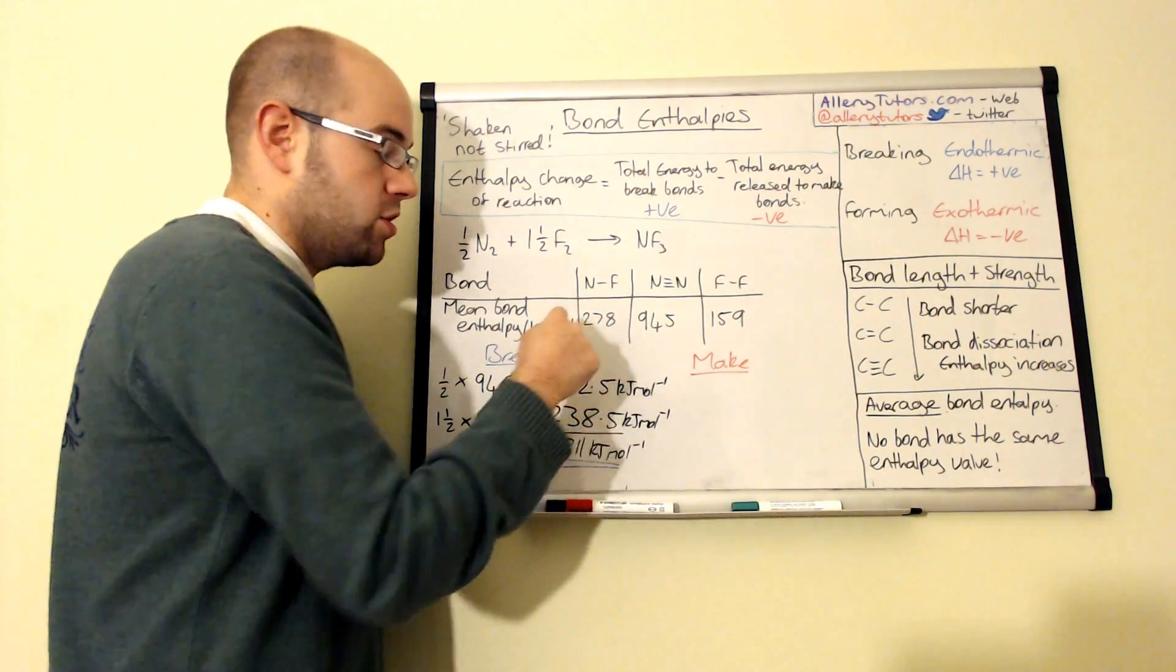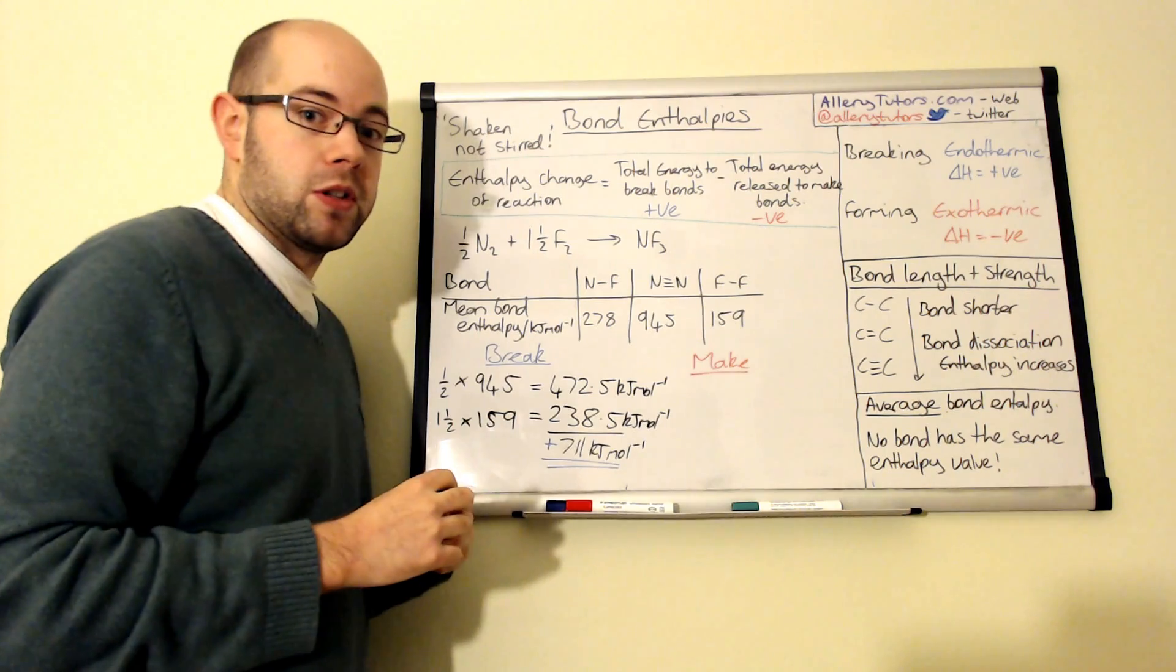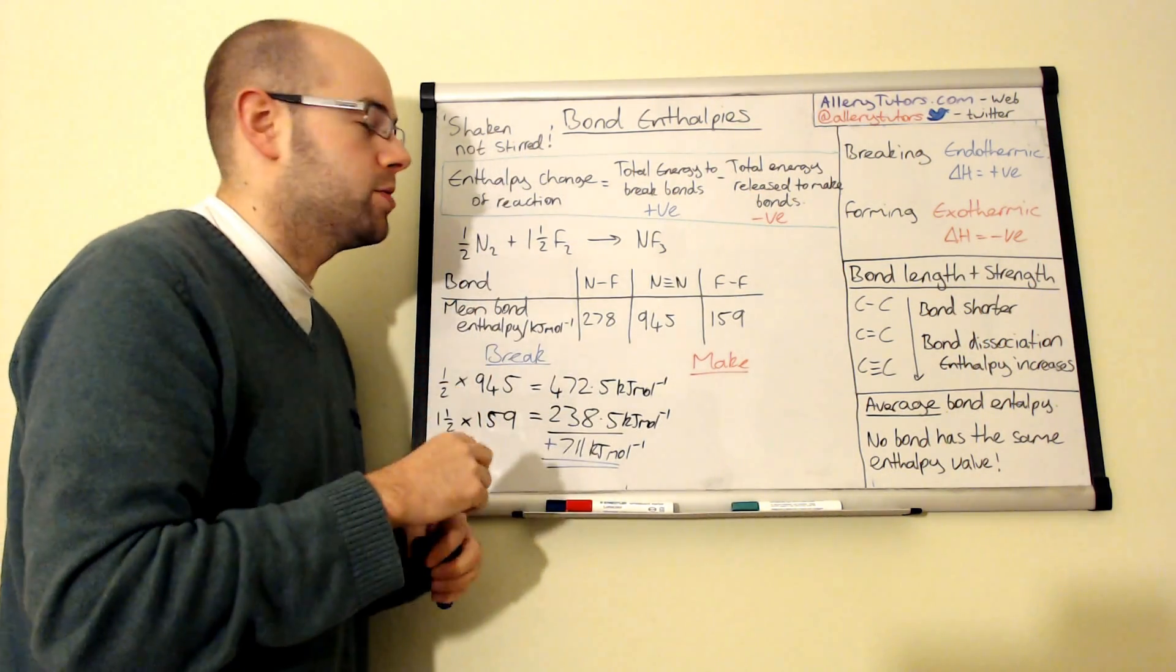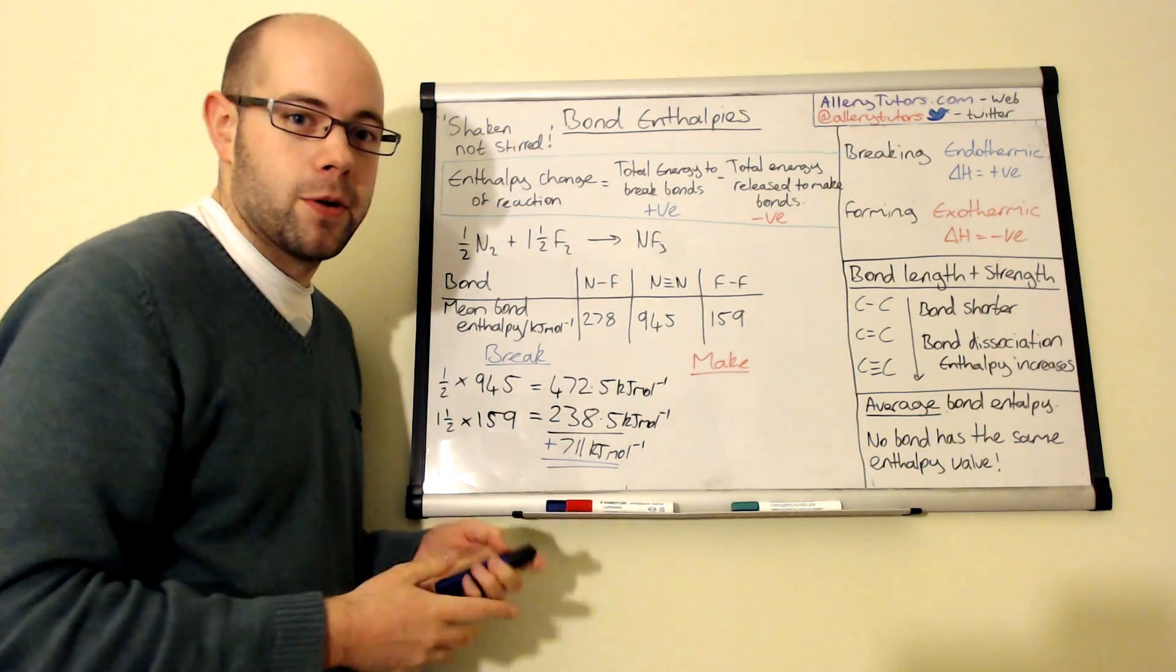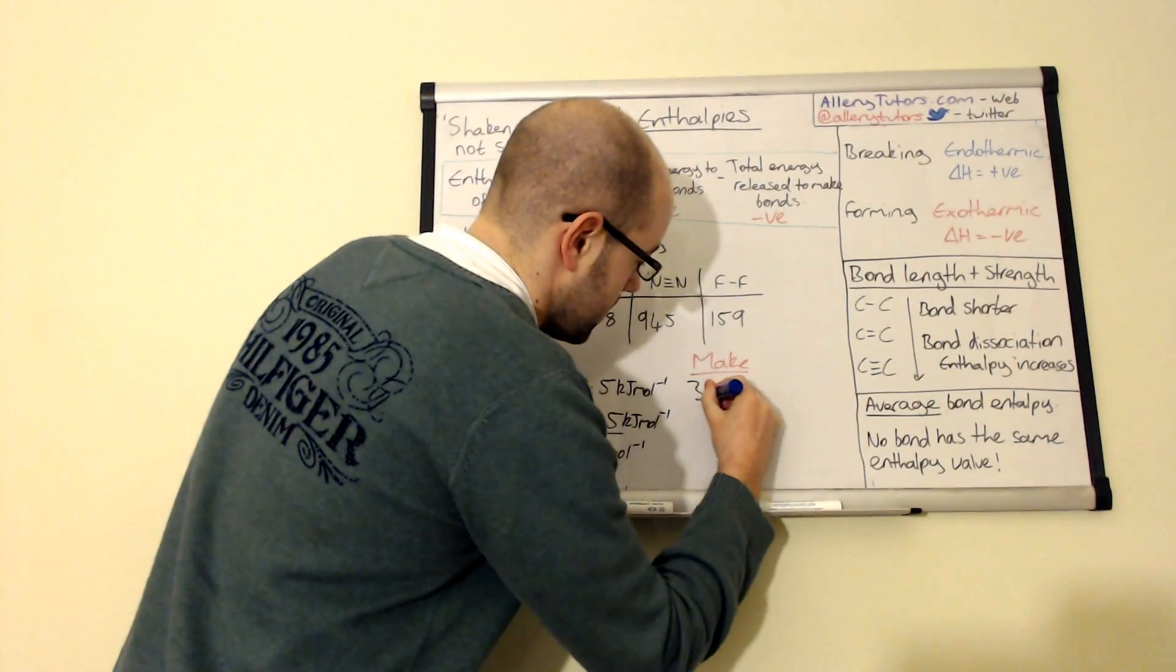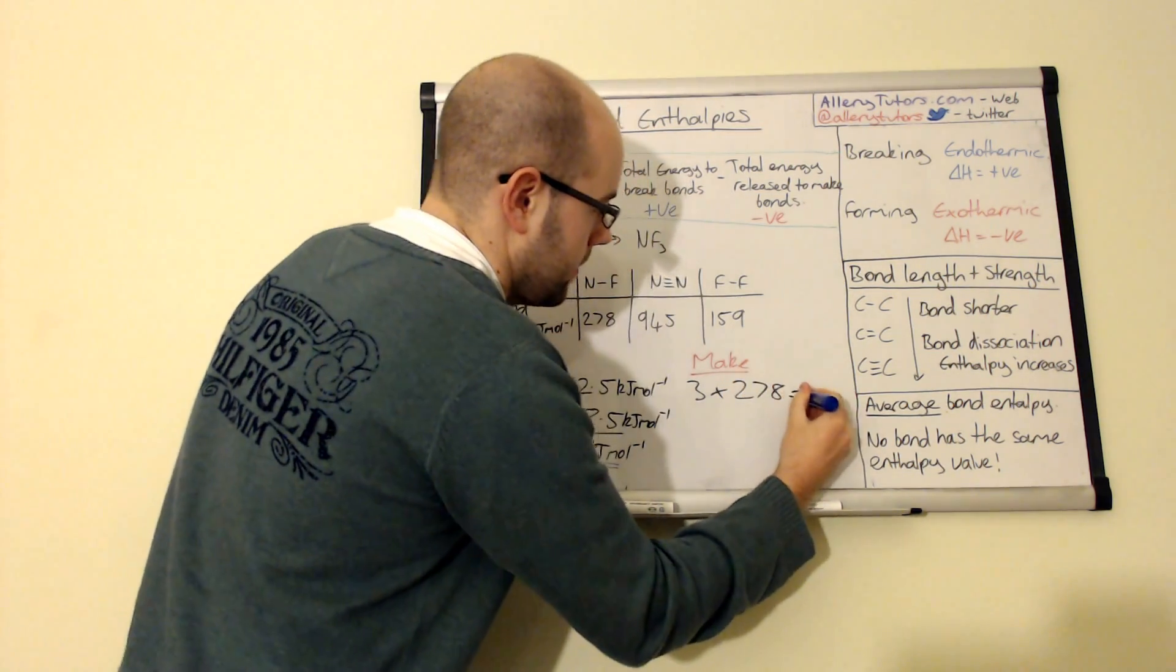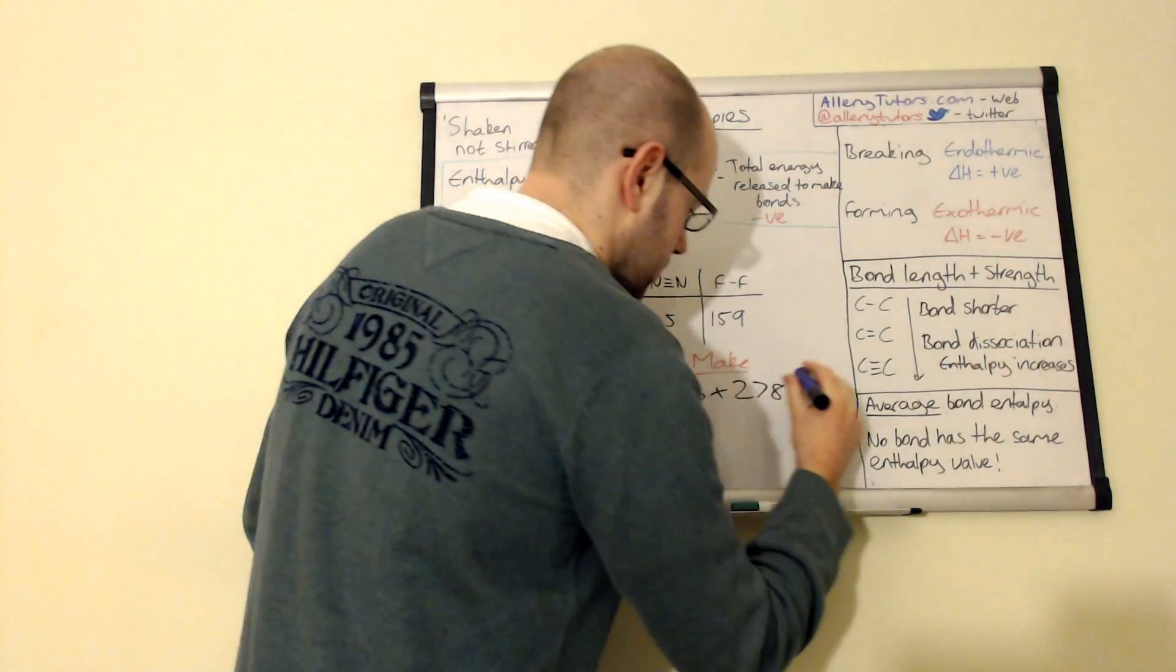Right, so we're making NF3. Now you can see here that we've actually got three NF bonds being made, so we've got, obviously that would just be one NF, but we've got three of them. So we need to do three times by 278. Sometimes it's a good idea to draw your displayed formula with all the bonds showing, and that makes sure that you've got every single bond, because you've got to make sure you get every bond, otherwise your calculation obviously won't come out with the right answer. Okay, so we've got NF3, so we're going to multiply, and we're going to do three times by 278. So put that on there, and you should get an answer, put that into the calculator, of 834.